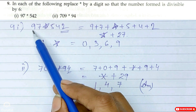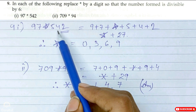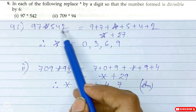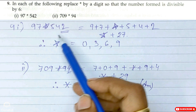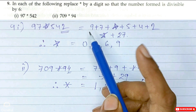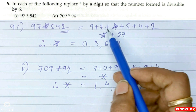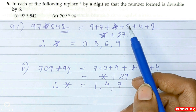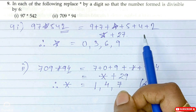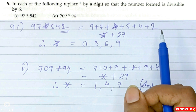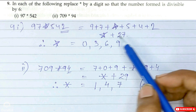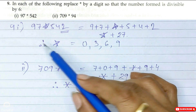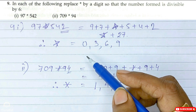Now question number 9, first part. The number is 97*542. We need to find the value of star — replace star by a single digit so that the number formed is divisible by 6. Always read the question carefully. We need to find out whether this given number is divisible by 6 or not.